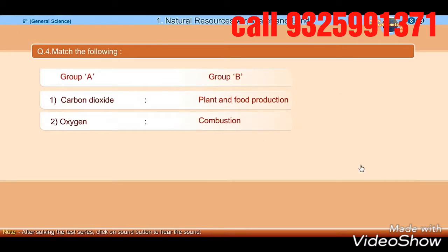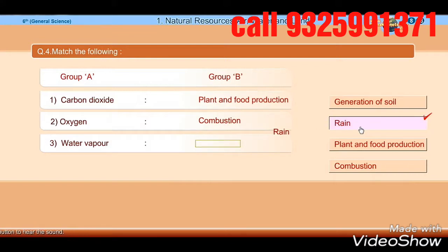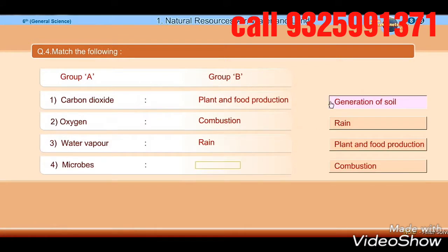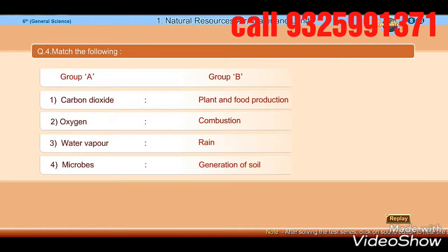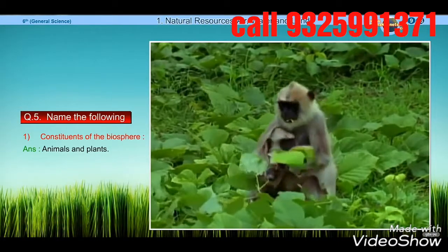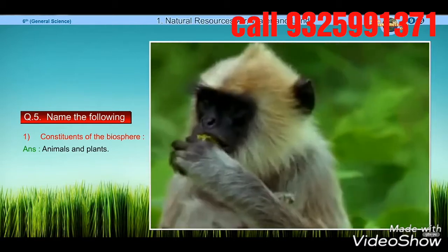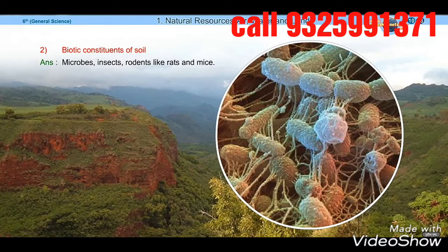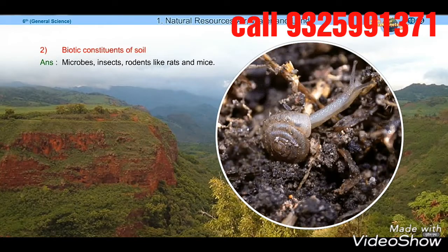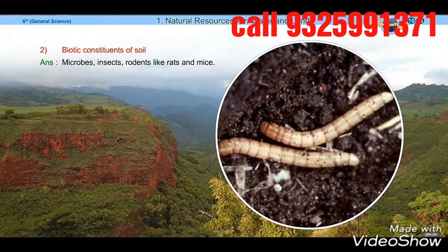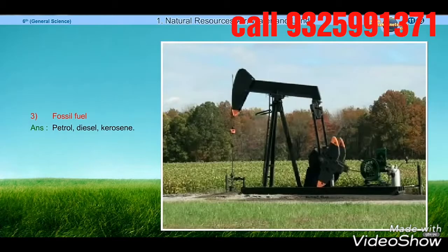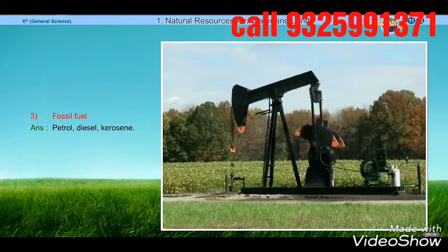The number of vehicles and factories in your surroundings increases. In vehicles and from factories, there is incomplete combustion of fossil fuels, releasing many air-polluting gases into the atmosphere. Polluting gases like carbon dioxide, carbon monoxide, sulphur dioxide, nitrogen dioxide, etc. cause dangerous and harmful effects — air pollution.